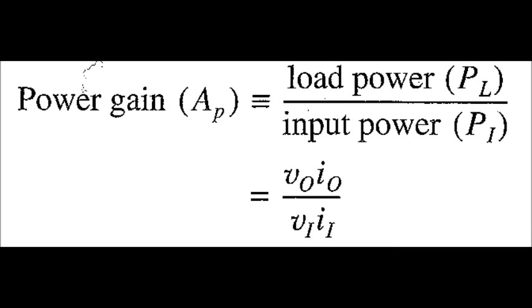The power gain is the product of the output voltage and output current divided by the product of the input voltage and the input current, which is also the product of the current gain and voltage gain.